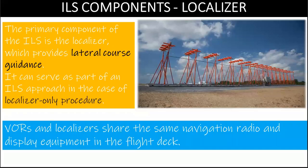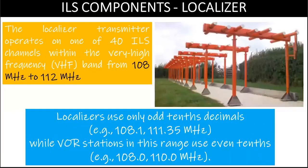ILS component: localizer. The primary component of the ILS is the localizer, which provides lateral course guidance. It can serve as part of an ILS approach in the case of a localizer-only procedure. VOR and localizers share the same navigation radio and display equipment in the flight deck. The localizer transmitter operates on one of 40 ILS channels within the very high frequency band from 108 MHz to 112 MHz. Localizers use only odd tenths decimals, for example 108.1, whereas VOR stations in this range use even tenths, for example 108.0 or 110.4 MHz.